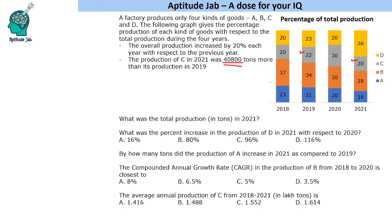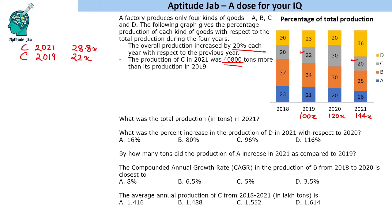Let's say the total production in 2019 was 100x. Then C in 2019 will be 22x, because C is 22% that year. Since production increases by 20% each year, in 2020 it will be 120x, and in 2021 it will be 144x. So C in 2021 will be 20% of 144x, which is 28.8x.